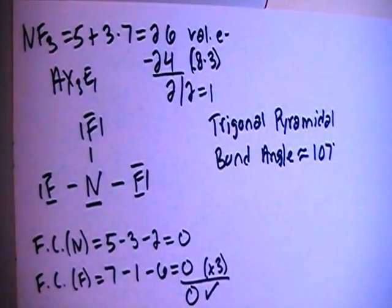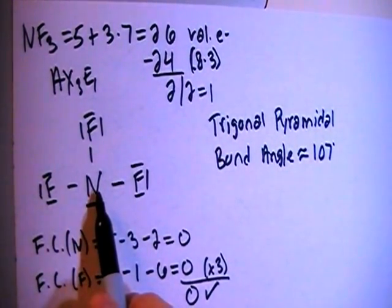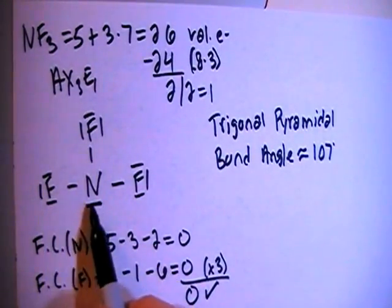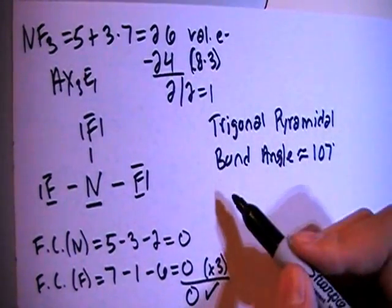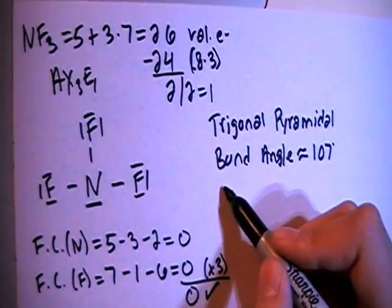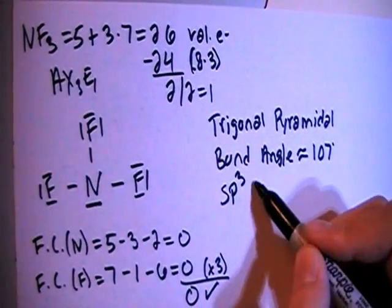In terms of hybridization, looking at the central atom here, there's 1, 2, 3, 4 electron groups or possible bonding sites, so that means you need 4 orbitals, so SP3 hybrid,